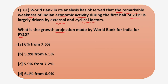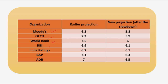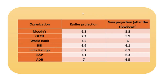The answer is A, that is 6%, down from 7.5%, because World Bank had earlier projected growth of 7.5% but has now reduced it directly to 6%. Moving to the next slide, the organizations whose projections are listed include Moody's, OECD, World Bank, RBI, India Ratings, S&P, and ADB — showing both earlier projections and new projections after the slowdown for FY20. These are important, so note them for your examination. This was a factual question. Now moving on to the next question.